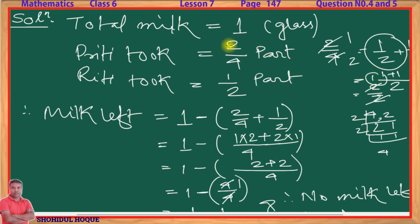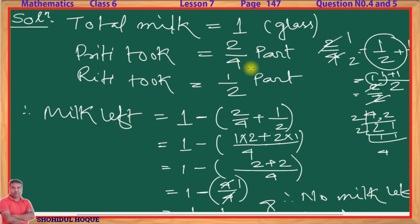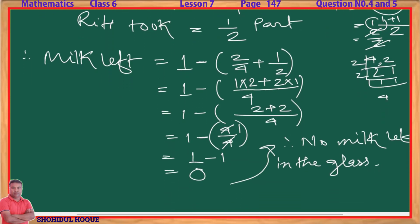So if you are writing the solution, you will find that each person took half and they finished the entire glass. This is the answer to Question 4.